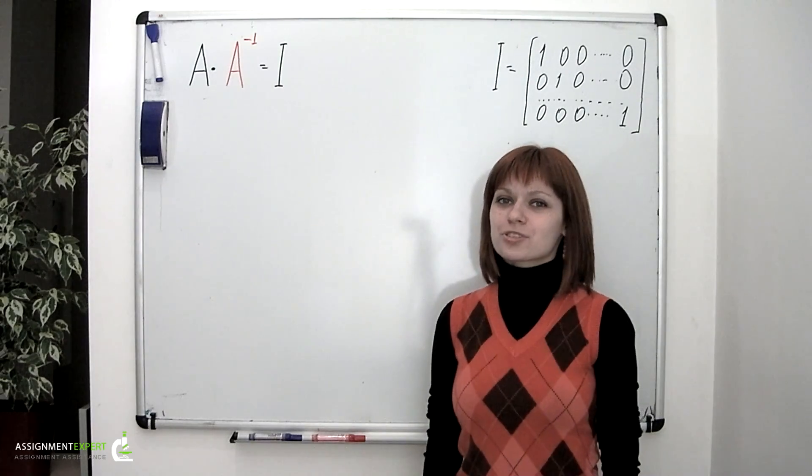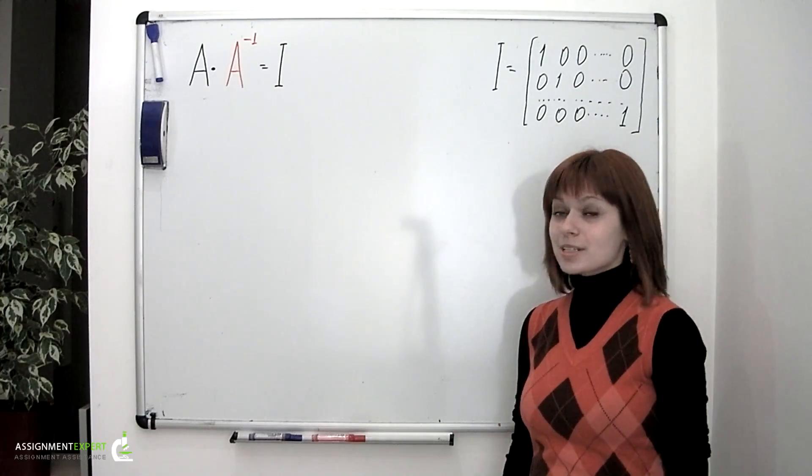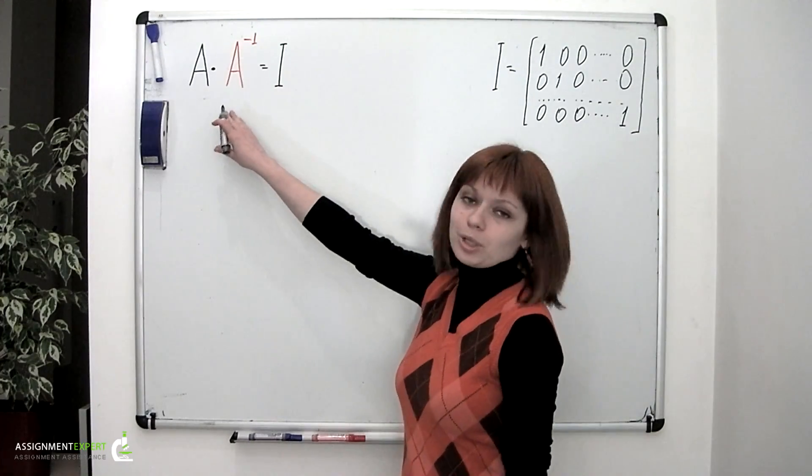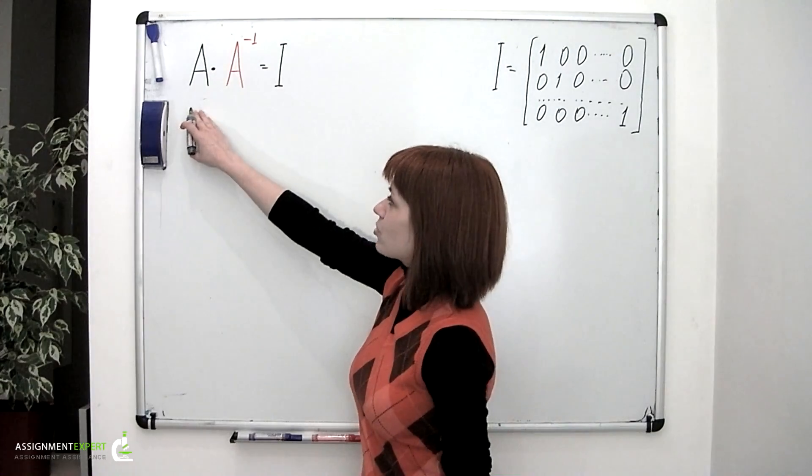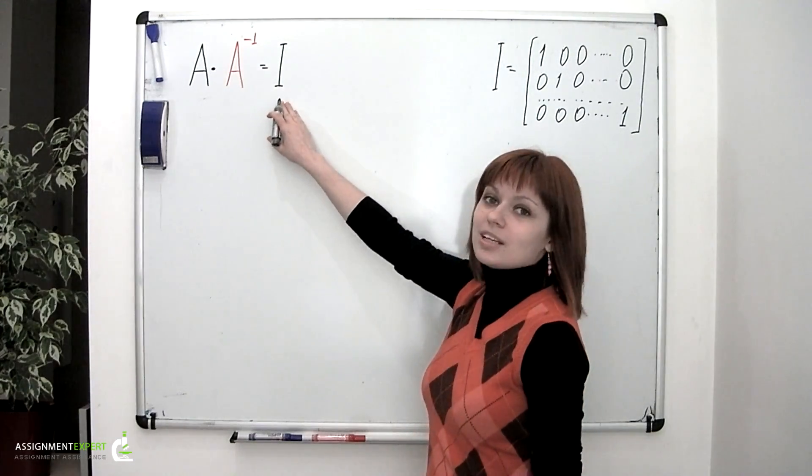In this video, we're going to talk about inverse matrices and how to find them. An inverse matrix is introduced through the following equality: A matrix multiplied by the corresponding inverse matrix equals an identity matrix.